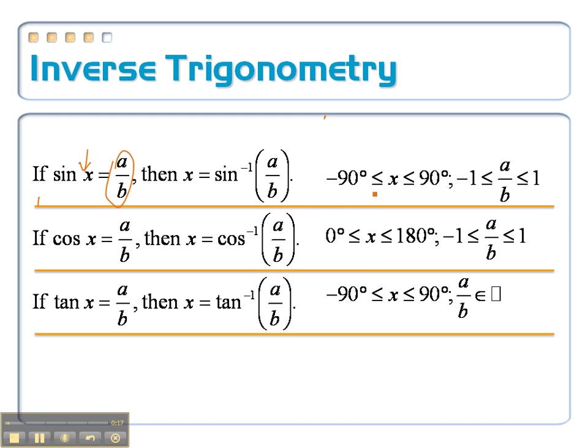So remember on the sine, that angle measurement that the inverse sine is going to give us has to be between negative 90 and 90. For cosine, it's between 0, 100, and 80, and for tangent, it's the same as the sine between negative 9 and 90.